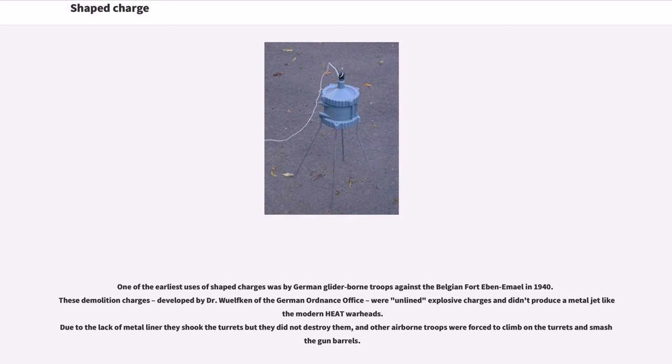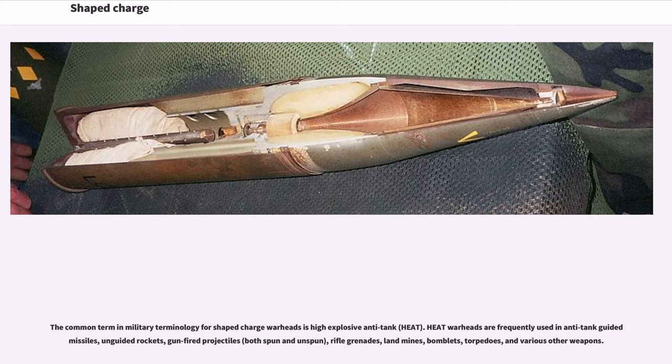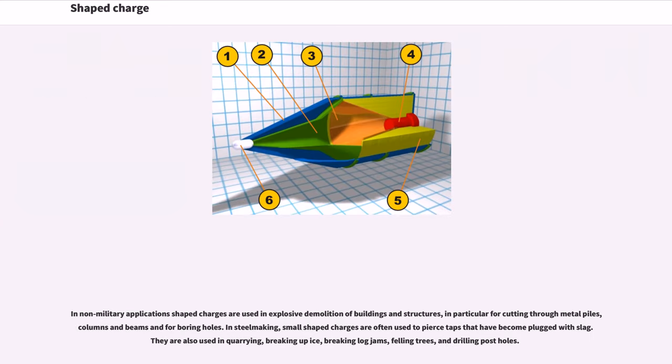One of the earliest uses of shaped charges was by German glider-borne troops against the Belgian Fort Eben-Emael in 1940. These demolition charges, developed by Dr. Wuelfken of the German Ordnance Office, were unlined explosive charges and didn't produce a metal jet like modern heat warheads. Due to the lack of metal liner they shook the turrets but they did not destroy them, and other airborne troops were forced to climb on the turrets and smash gun barrels. The common term in military terminology for shaped charge warheads is high-explosive anti-tank, HEAT. Heat warheads are frequently used in anti-tank guided missiles, unguided rockets, gun-fired projectiles both spun and unspun, rifle grenades, landmines, bomblets, torpedoes, and various other weapons. In non-military applications shaped charges are used in explosive demolition of buildings and structures, in particular for cutting through metal piles, columns and beams and for boring holes.